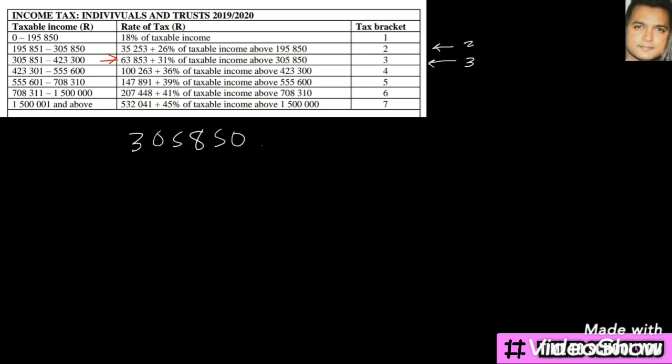We take 305,850 minus 195,850 from tax bracket two, and we get an amount. This amount will be 110,000.